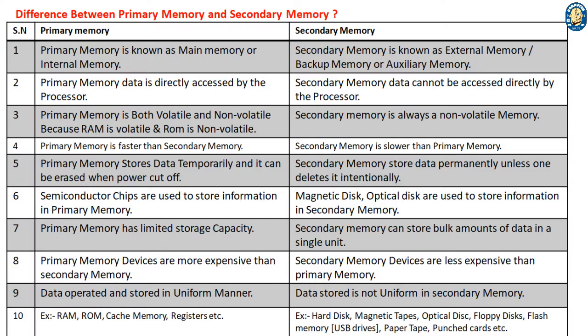Difference between primary memory and secondary memory. 1. Primary memory is known as main memory or internal memory. Secondary memory is known as external memory, backup memory, or auxiliary memory.